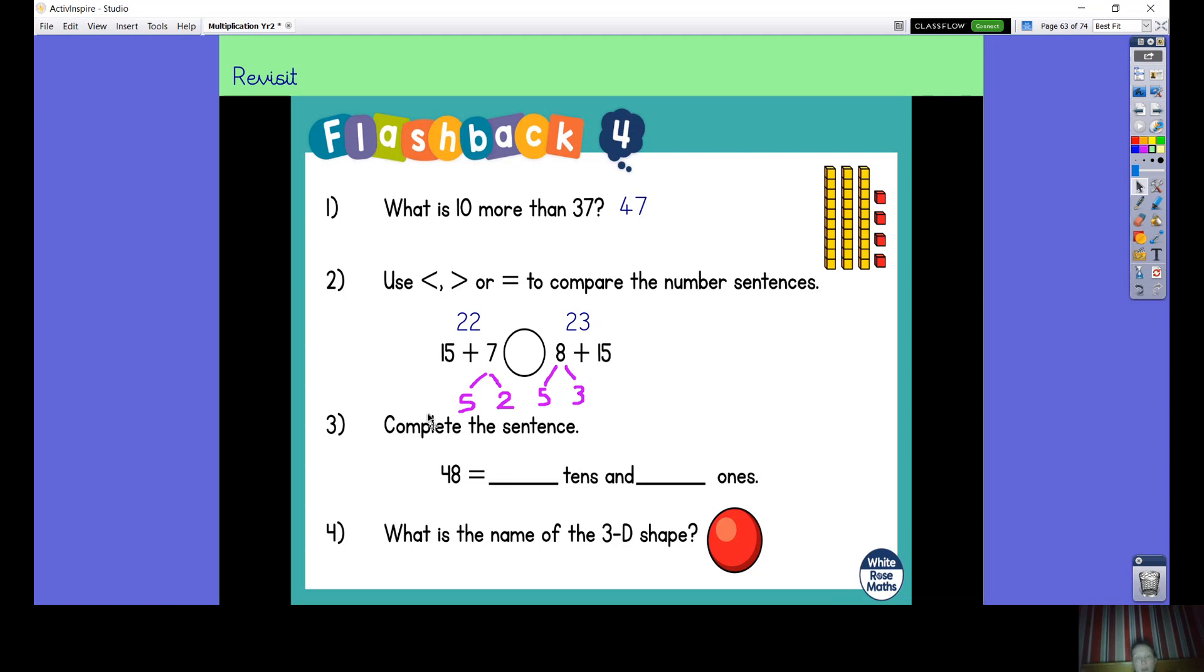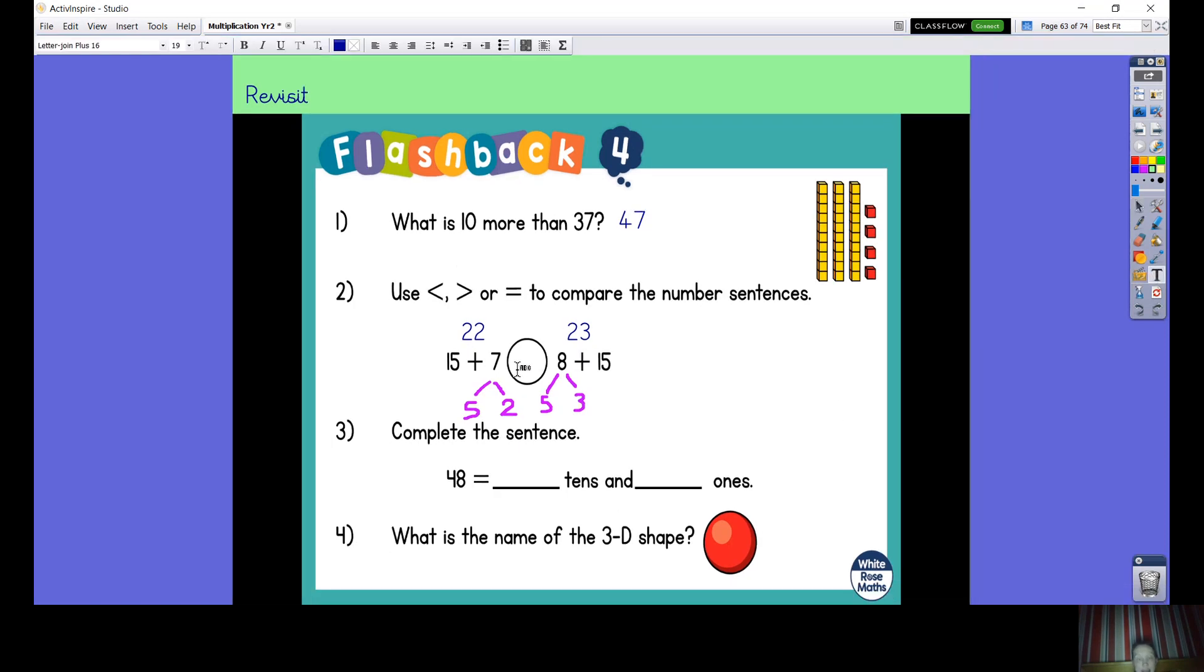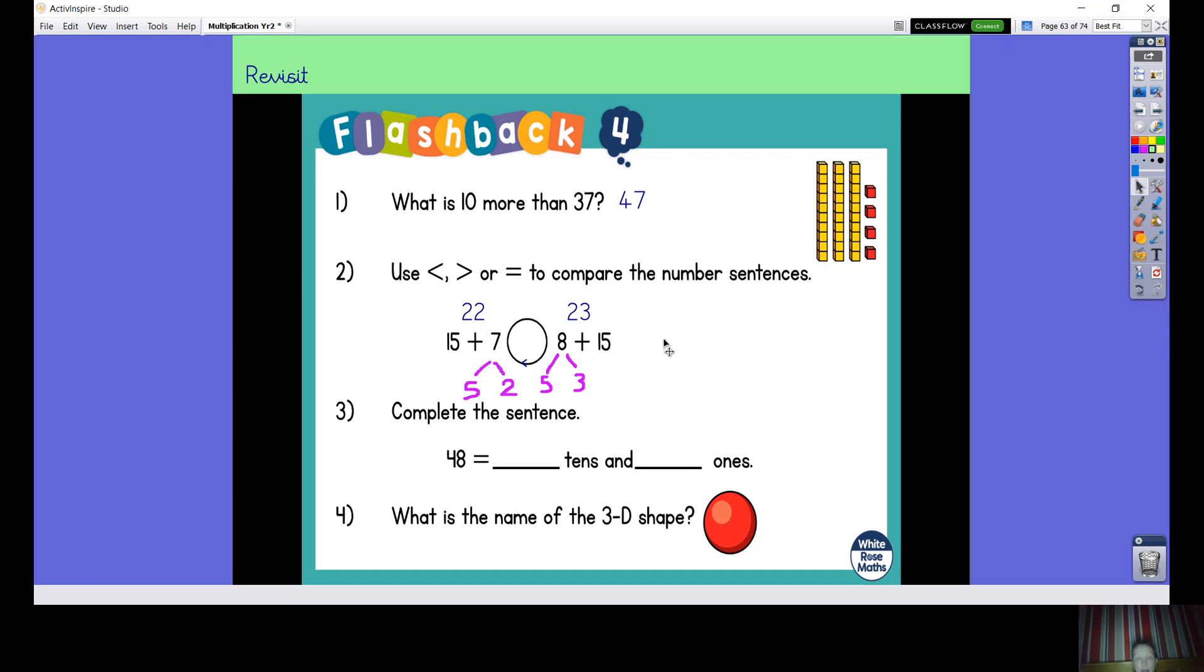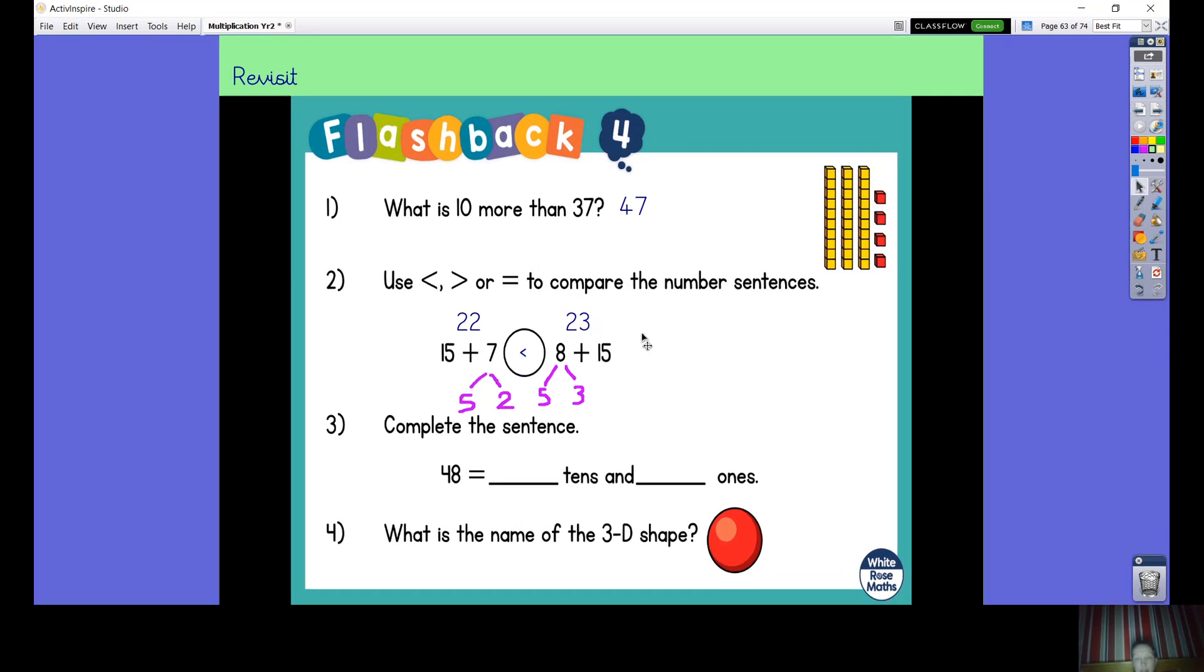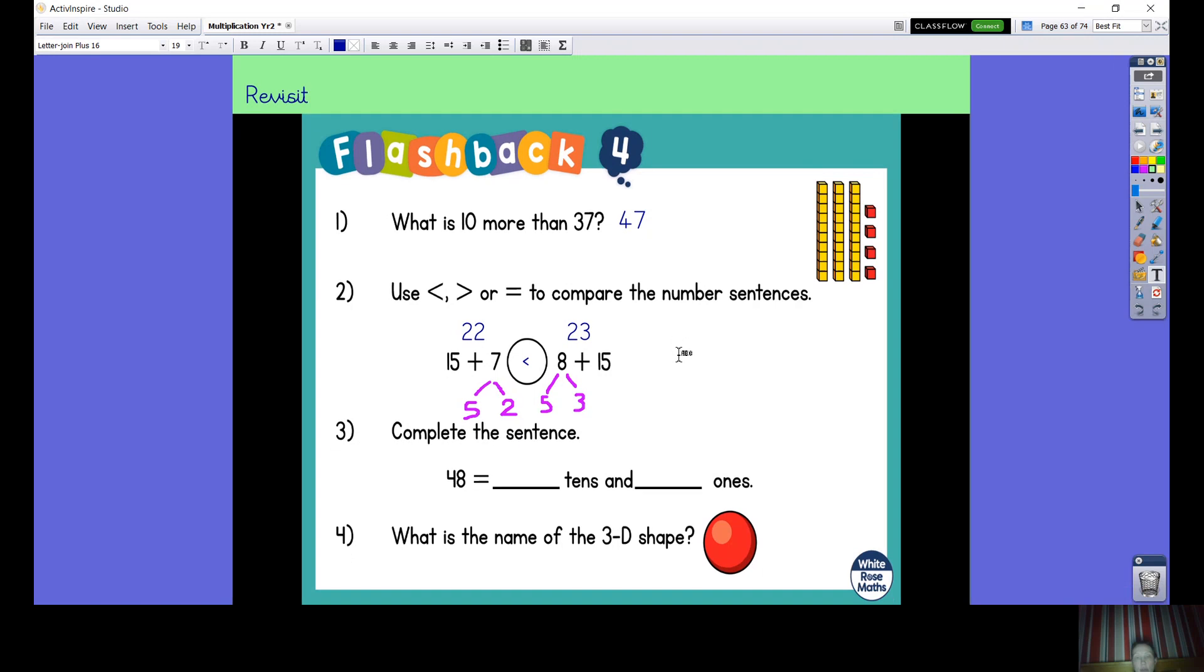Now we've got 15 add 8. Well, 8 is a 5 and a 3, so 15 add 5 is 20, add 3 more is 23. We can see that this side is greater, it's got an extra one, so 23 is greater than 22. But we don't read it that way around, we say 22 is less than 23.